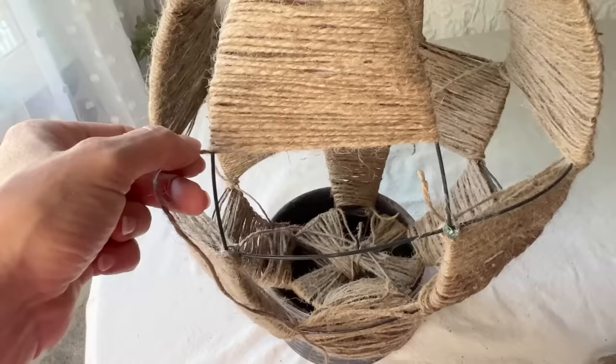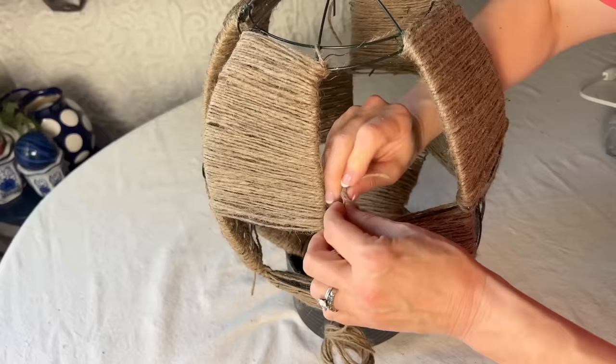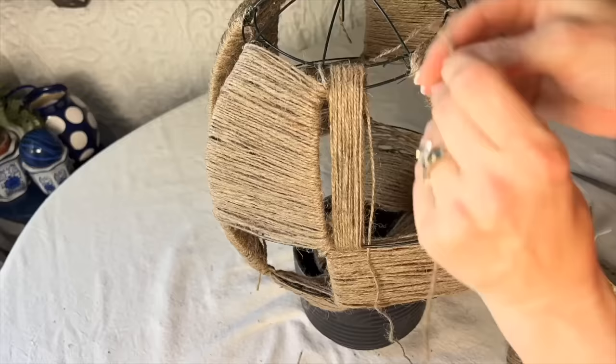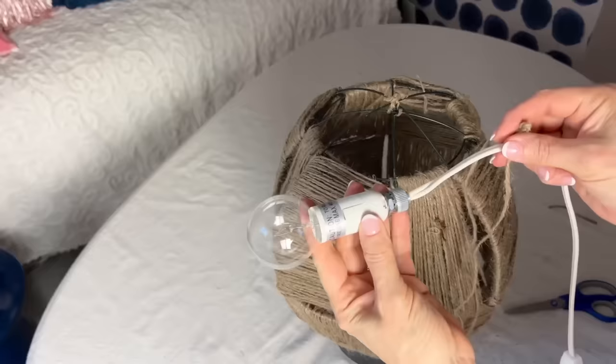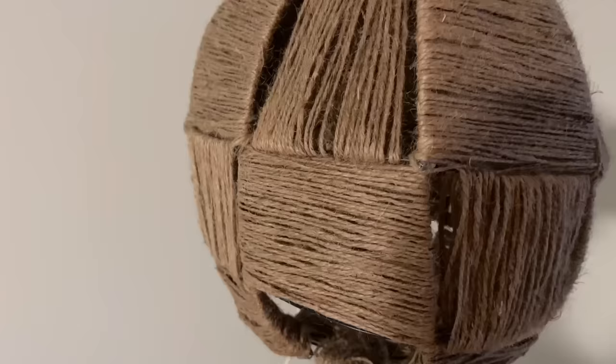Work your way up the globe and weave the jute in every other section. Once you have the horizontal sections complete, start to weave the alternate sections vertically. Take a light cord and attach it to the top of the globe with the bulb hanging in the center of the globe. Use a very low wattage bulb that does not get hot.